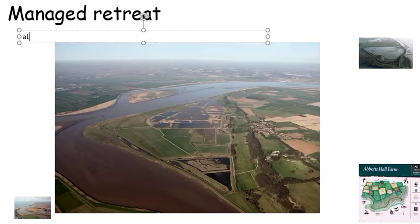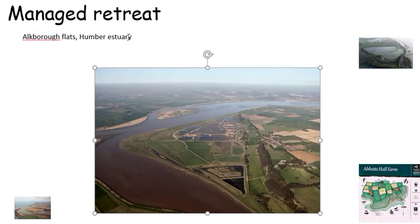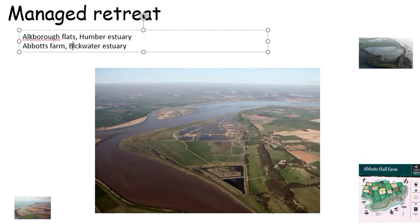The two case studies are: Alkborough Flats on the Humber Estuary — we're going to look at that in a lesson or two and look at the strengths and weaknesses. The other one is Abbott's Farm on the Blackwater Estuary, a tributary of the River Thames, so southeast.